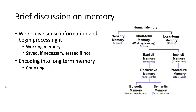Some of the ways we can assist encoding include memory palaces — a cognitive tool where you associate things with a physical location — and repetition, like writing a word ten times from first grade. Below that, we get into explicit and implicit memory. Explicit is your conscious memory, implicit is unconscious.